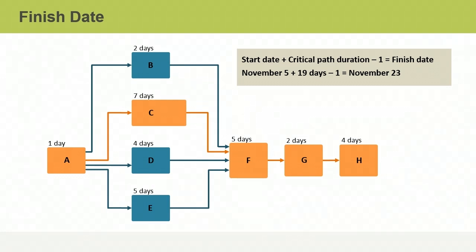For example, if the project starts on November 5th and the first day is a working day, the project finish date would be November 23rd. Working within the project's start and finish dates, you can then identify possible start and finish dates for each activity based on its estimated duration. You can also protect the schedule by ensuring enough resources are allocated to critical path activities.